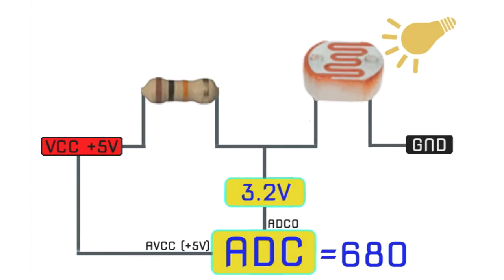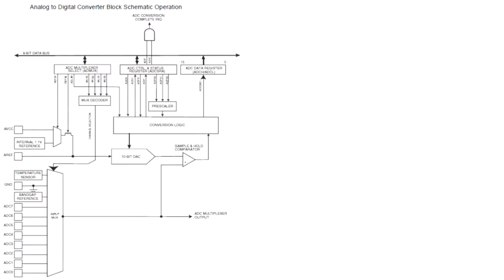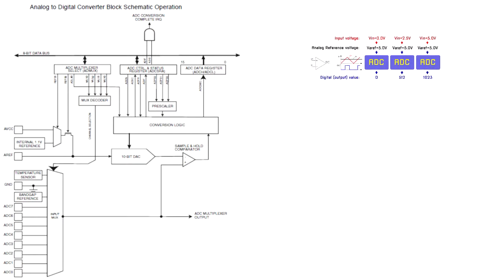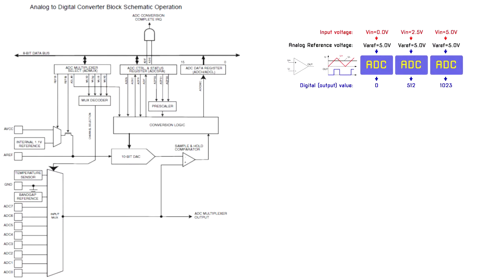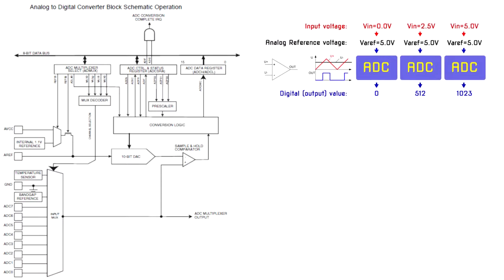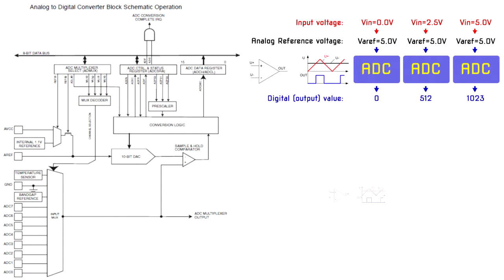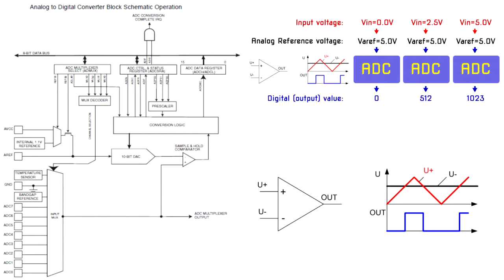For transferring external continuous analog information into a digital computing system, we must convert them into integer digital values. This type of conversion is carried out by an analog to digital converter, ADC. The process of converting an analog value into a digital value is known as analog to digital conversion. Analog signals are real world signals around us like sound and light. Digital signals are analog equivalents in digital or numeric format, which are well understood by digital systems like microcontrollers. ADC is hardware which measures analog signals and produces a digital equivalent of the same signal.